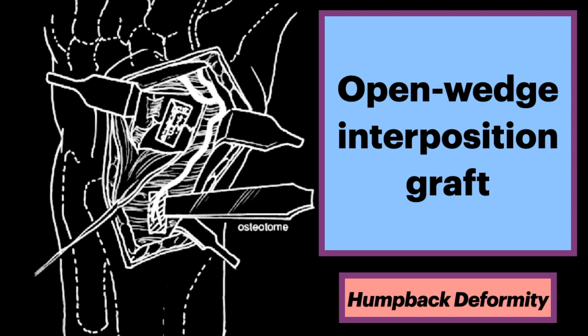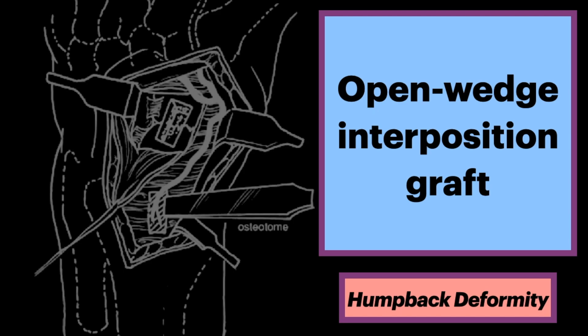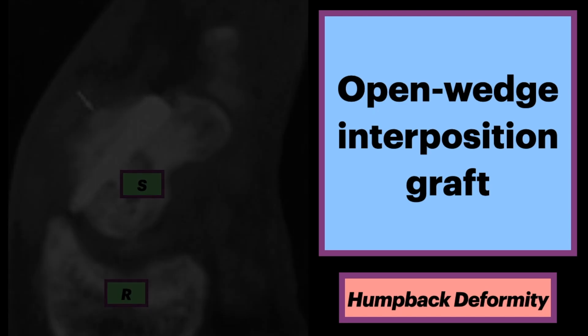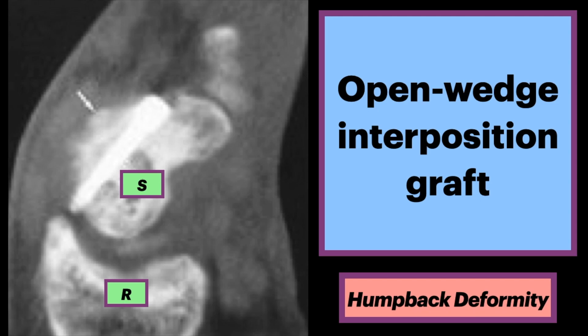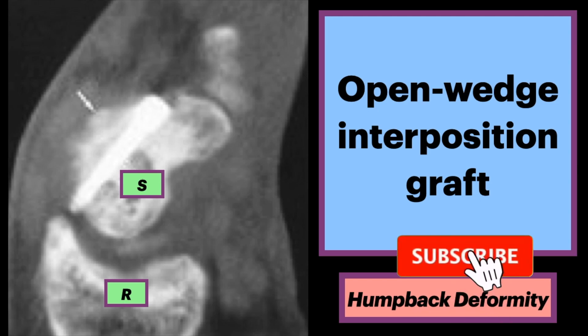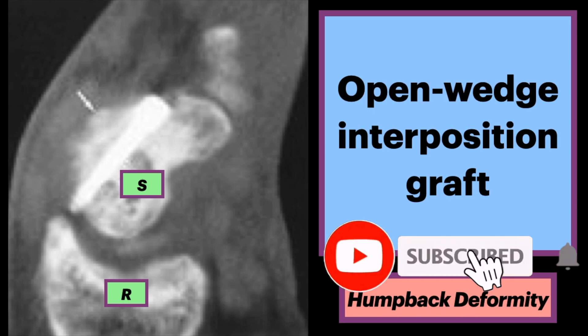The site of the scaphoid nonunion is debrided, creating an oval-shaped defect in the non-articular surface of the dorsal cortex. The vascularized bone is then contoured to fit the shape of the defect. A screw or pin then fixates the scaphoid with the graft in place. S denotes scaphoid, R denotes distal radius.